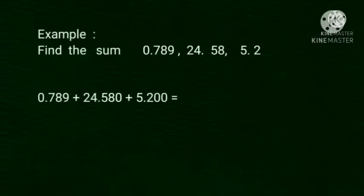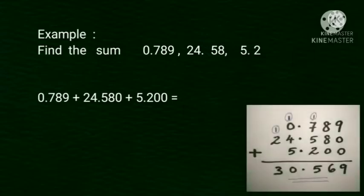Let's see another example. Find the sum 0.789, 24.58, 5.2. First, we arrange in column. 0.789 plus 24.58. Here, we add 0 after the digit 8.